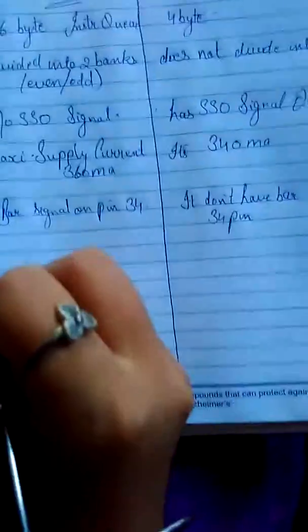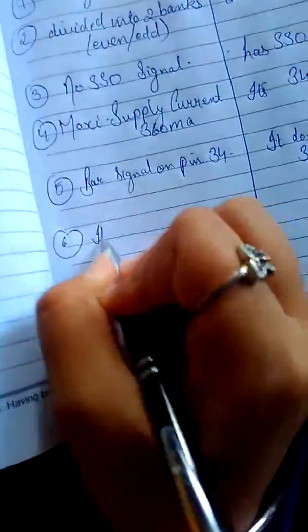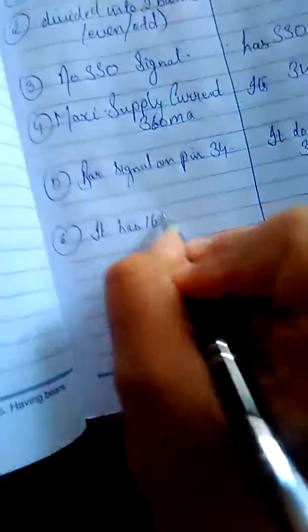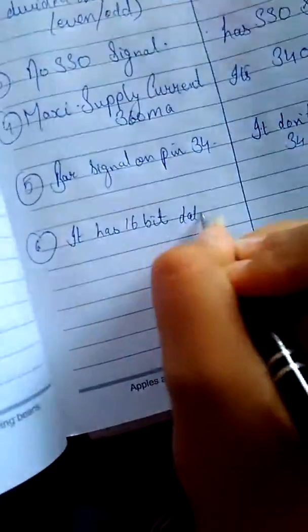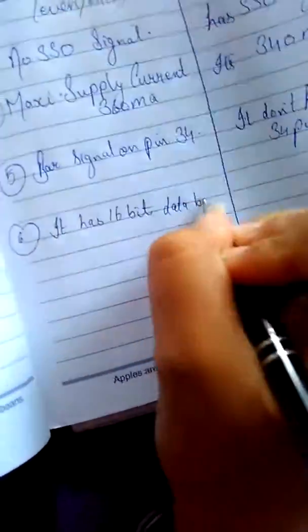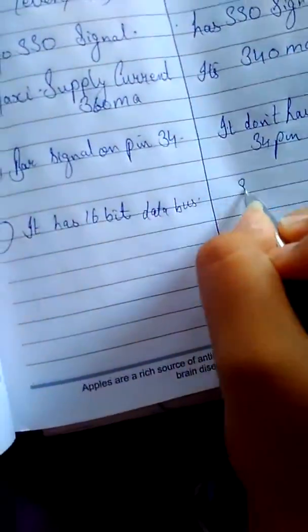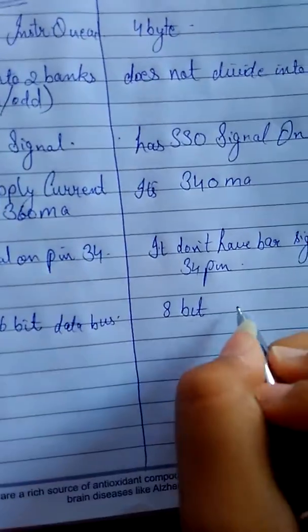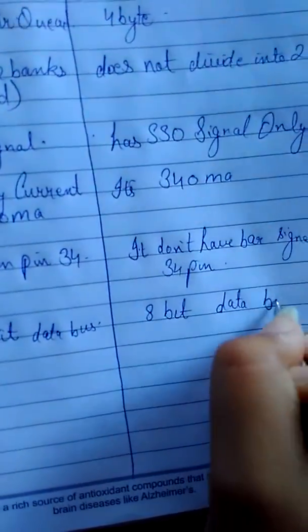Another point is that the 8086 has a 16-bit data bus, while the 8088 has an 8-bit data bus.